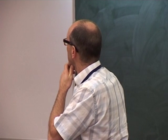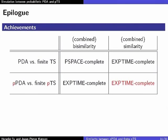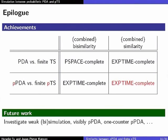In summary: in the non-probabilistic case, bisimulation between a PDA and a finite transition system is PSPACE-complete, and simulation is EXPTIME-complete. In the probabilistic case, both bisimulation and simulation checking are EXPTIME-complete — adding probabilities does not increase complexity. Future work includes weak simulation, visibly probabilistic pushdown automata where pushing and popping is restricted, and special cases such as one-counter and stateless models.